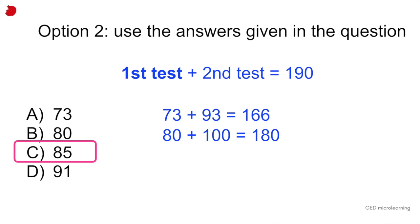Answer D. 91 for the first test. The second test would be 111. That gives you 202. That's incorrect. And if you look at option C, 85 plus 20 would be 105. And together, they add up to 190. So you can see that you can solve this problem in two ways.